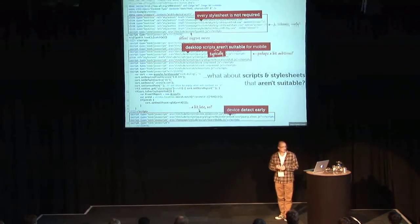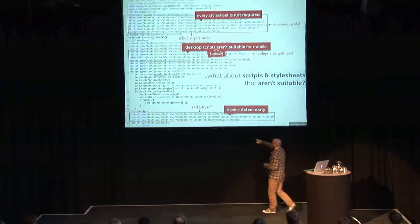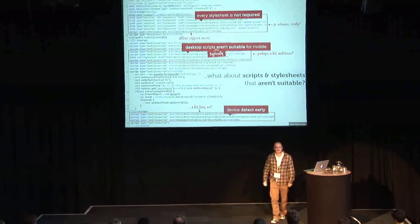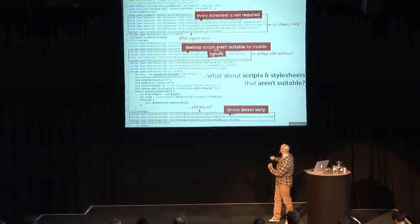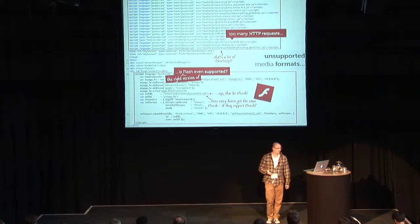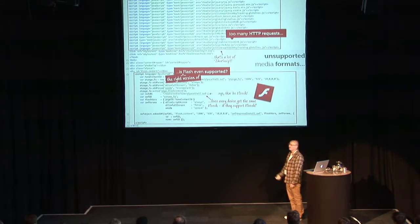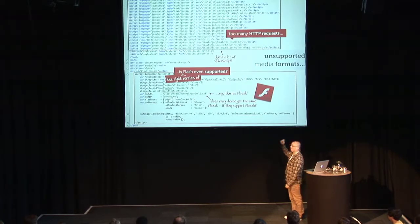We've got scripts — jQuery UI plugins — which on mobile aren't really applicable. There's also device detection loaded after everything else, which I absolutely love. So they've loaded all of this, and then they detect the device. Somebody includes Flash — what do you do with that on an iPhone? That probably shouldn't even be in the markup to begin with. And you've got JavaScript files that haven't been combined, resulting in a lot of HTTP requests — probably not the best thing to serve to mobile either.